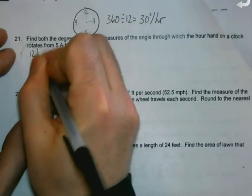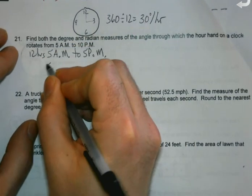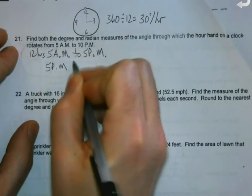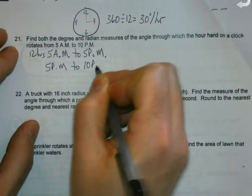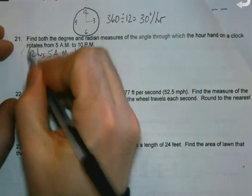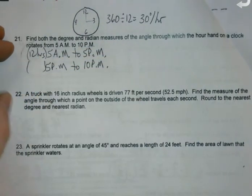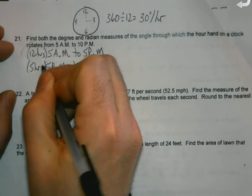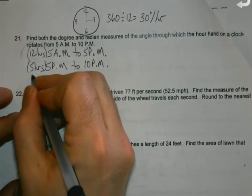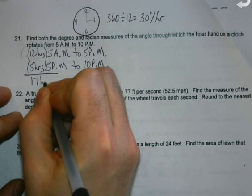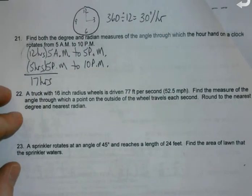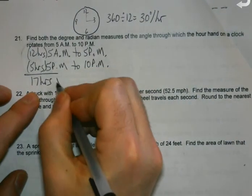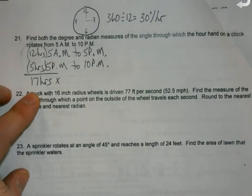Then from 5 PM to 10 PM is an additional how many hours? Five. Thank you. So we have 17 hours that we're looking at, and 30 degrees per hour.